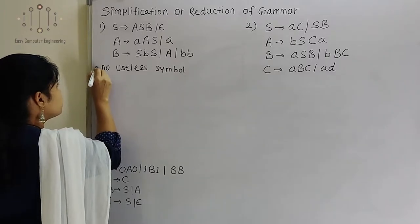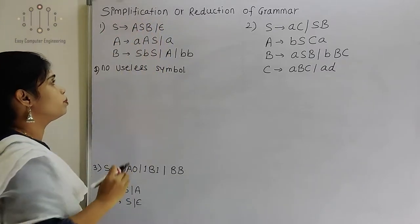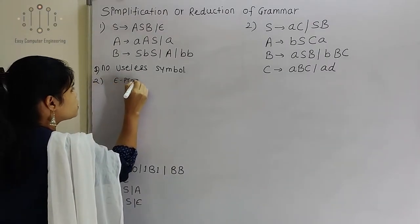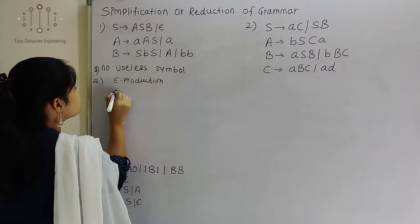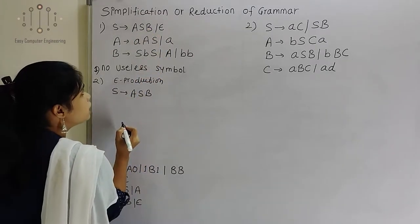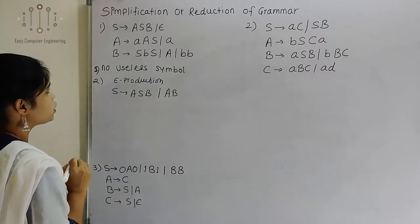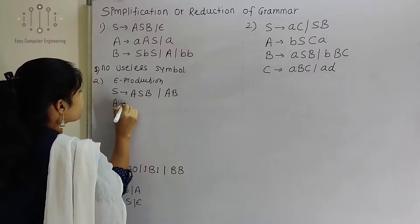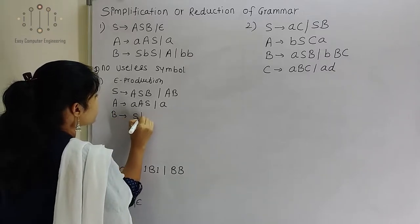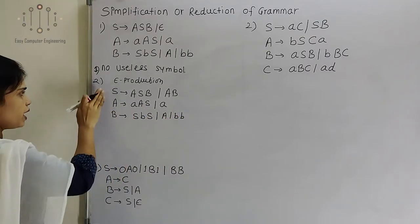Now second step: is there any epsilon production? Yes, in S there is an epsilon production, so we have to remove it. To remove epsilon production from S: S tends to ASB, and if I put S as epsilon, I will get AB as a production. So we remove the epsilon production from S. A we will write as it is, as there is no epsilon production. B also we write as it is: BS and AB. This is the grammar after removing epsilon production.